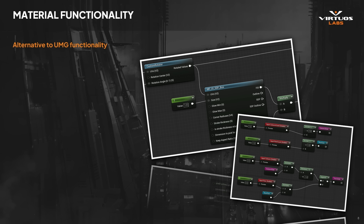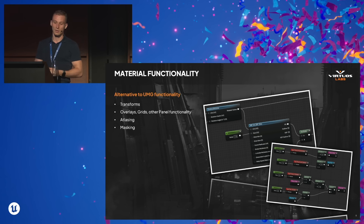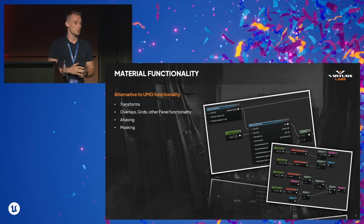Some of the material functionality we can use to replace UMG layout consists of transforms, because you can transform anything in a material. Using linear interpolation you can get rid of overlays, grids, or panels. You can create a highly sophisticated atlas for UI in materials. And of course, masking is something that you cannot do without a material.